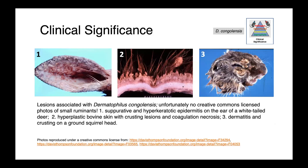Here we can see some pathological lesions associated with Dermatophilus congolensis. On the right, we have a suppurative and hyperkeratotic epidermitis on the ear of a white-tailed deer. In the center, we have hyperplastic bovine skin with a very greasy and crusting appearance. And on the right, we have dermatitis and crusting on a ground squirrel head. While these images may be of species other than small ruminants and horses, these would be classical appearances of the lesion.